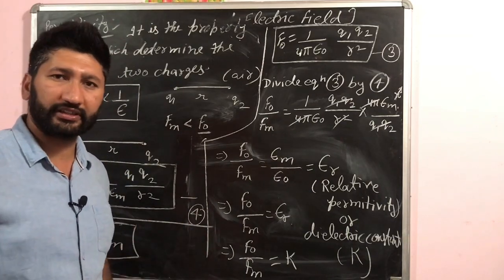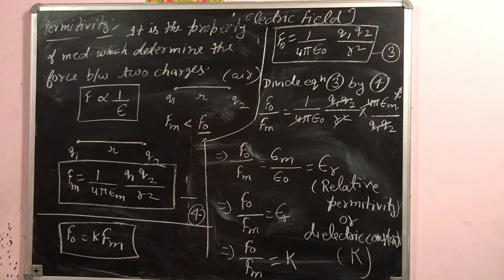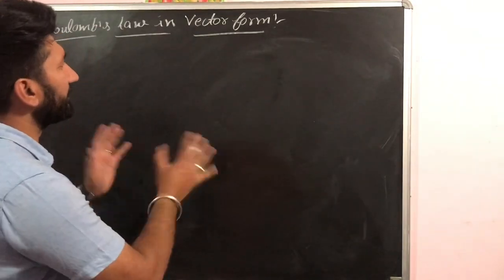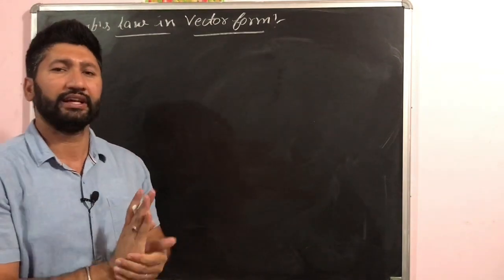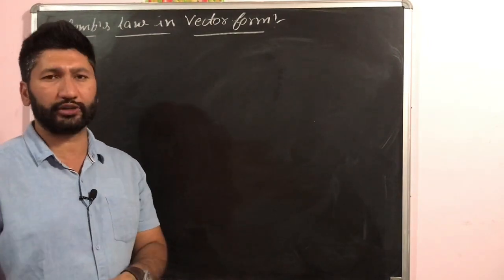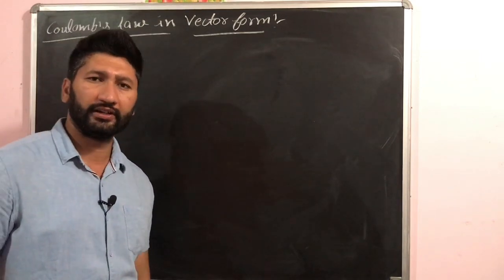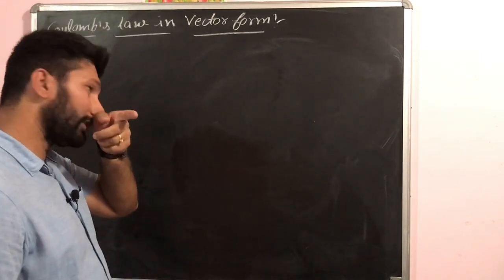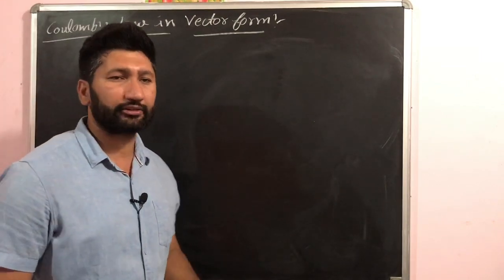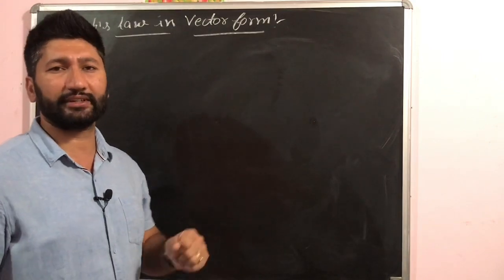Now we come to Coulomb's Law in vector form. Let us discuss how to derive Coulomb's Law in vector form. We already have the scalar form: F = k·q1·q2 / r². Now if we want to write the same force in vector form, we need to use a coordinate system.